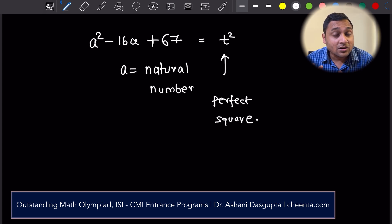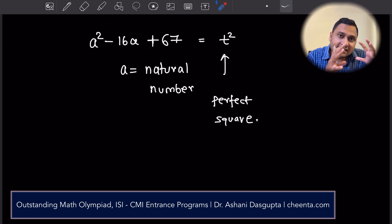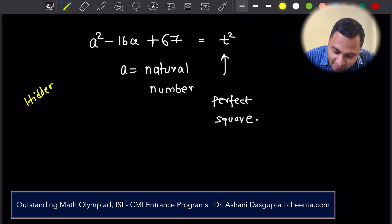and this sort of problems actually begin with observations. The first observation is that this left-hand side has a square hidden inside it. In the classes, I mention this as the hidden square observation.